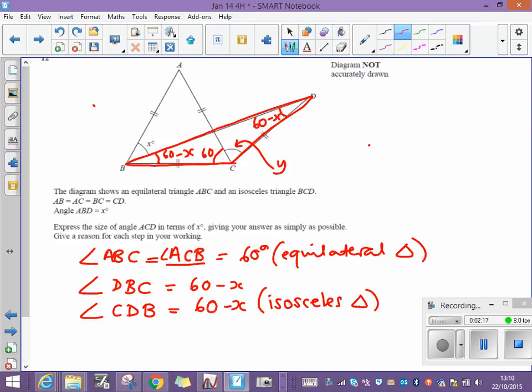Let's move up here. So if I just add together, if I call this one y, then this whole angle here is y plus 60. So y plus 60 plus this angle here, which is 60 minus x